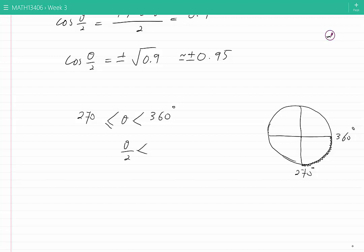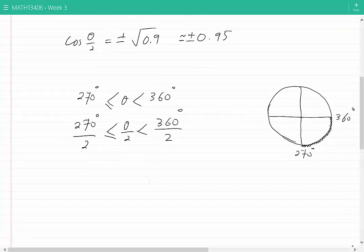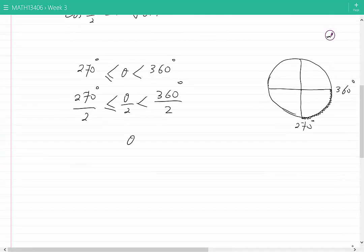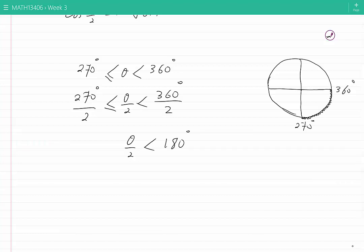We would have θ/2 < 360°/2 and ≥ 270°/2. That means θ/2 would be less than 180° and greater than or equal to 135°.